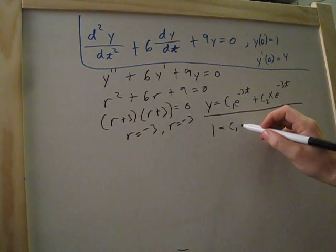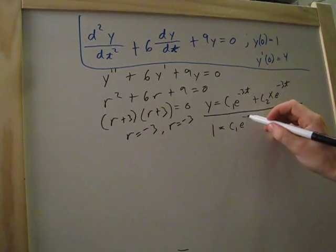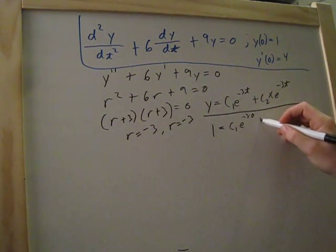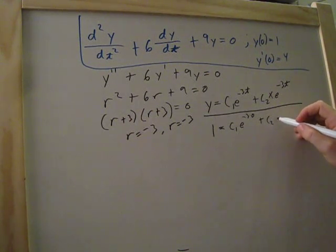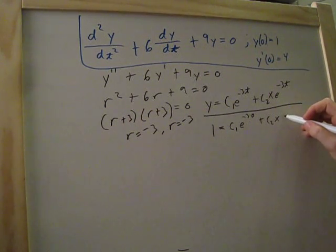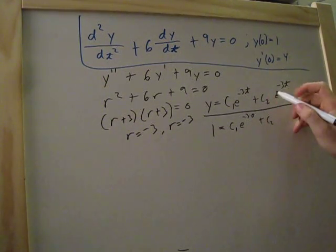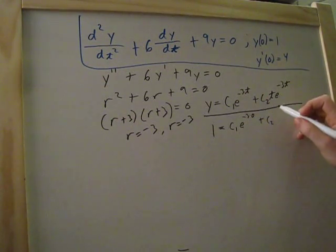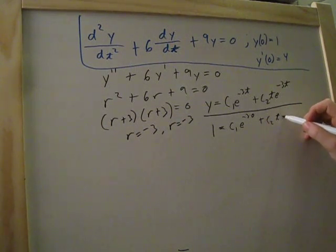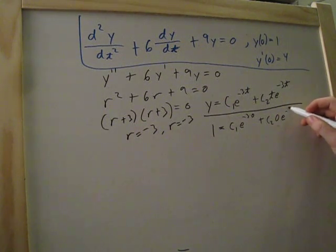So c1 e to the negative 3 times 0 plus c2t. Actually, that's going to be t there. The variable is t we're working with.